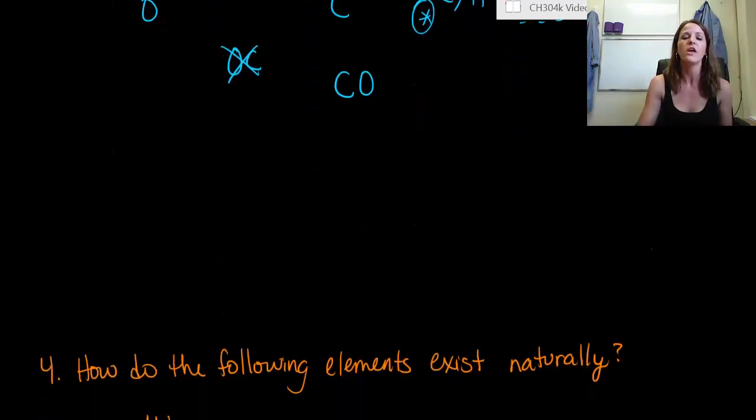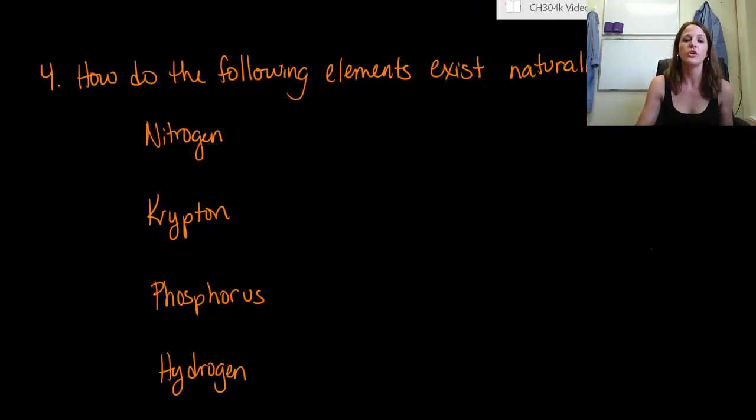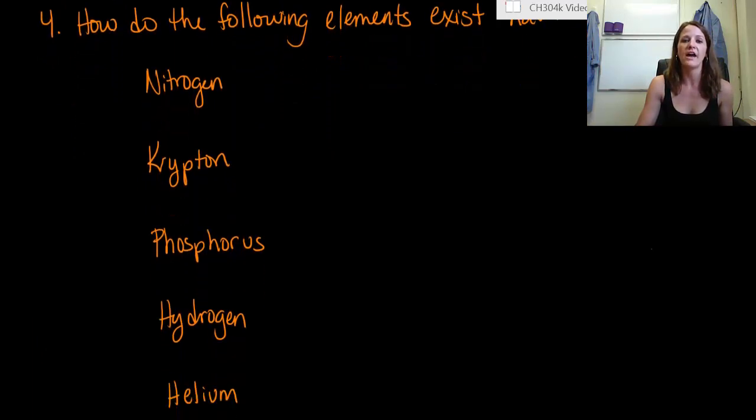All right now I have one more for you and this is just standard convention here. So what I'm trying to get you to do is look at all five of these and figure out how do the following elements exist naturally. Okay so how do they exist naturally? Is nitrogen a gas? Is nitrogen a solid? Does it exist just by one nitrogen? Does it exist with five nitrogens? How do these things exist naturally? So I'm looking for a phase and a formula. Go. All right did you get an answer? This might have been a little bit more challenging based on your previous education or your previous knowledge. So we're going to go through this together.